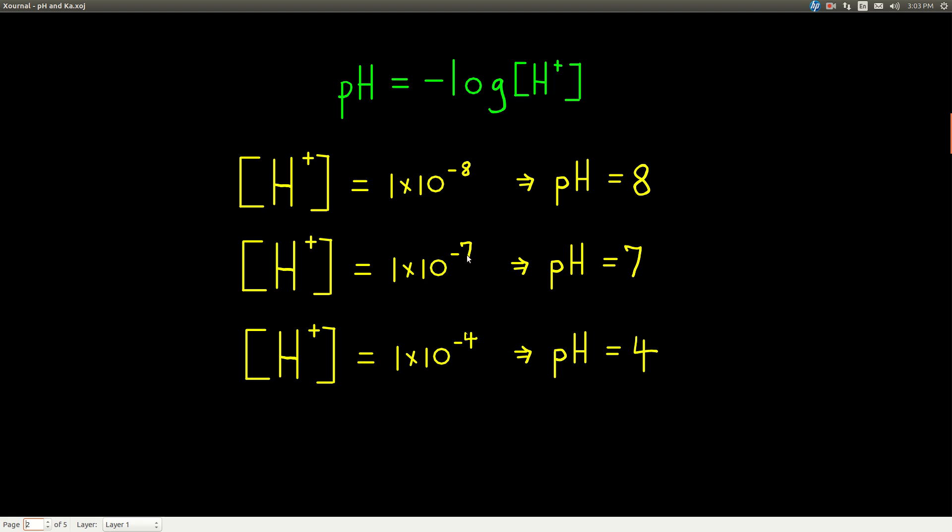If it's 1 times 10 to the minus 7th, it's 7. Now if it's somewhere between 1 times 10 to the minus 8th and 1 times 10 to the minus 7th, let's say 5 times 10 to the minus 7th, it's going to have a pH between 7 and 8. If the concentration of hydrogen ion is 1 times 10 to the minus 4th, the pH is 4. Easy as that.